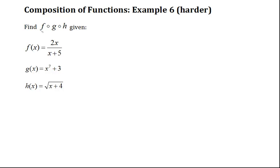In this example, we're going to find f compose g compose h, given that f(x) equals 2x over x plus 5, g(x) equals x to the 7 plus 3, and h(x) equals the square root of x plus 4.